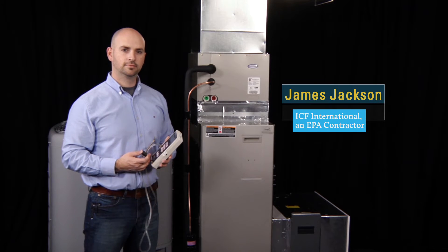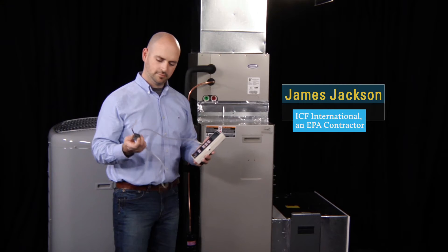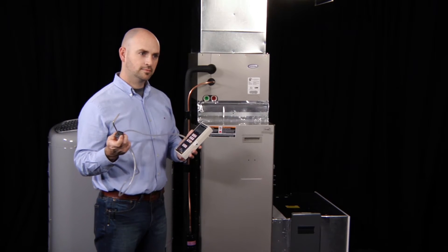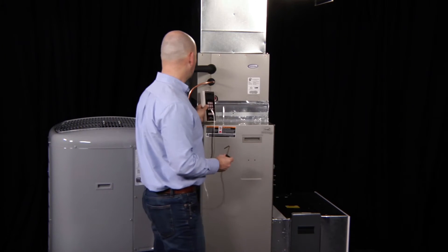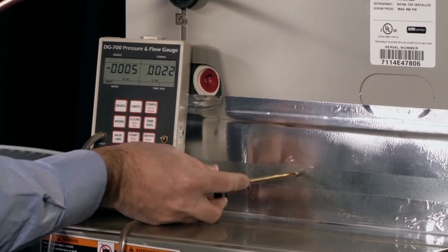Now, James has already connected the tubing to the static pressure probe and the manometer and turned on the HVAC system. To take a reading, all he has to do now is insert the static pressure probe into the hole, officially called a test port, and read the resulting pressure on the manometer.